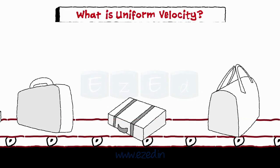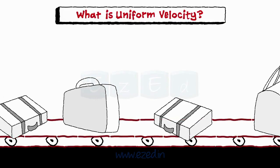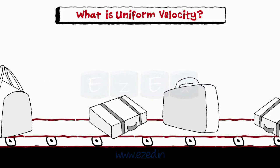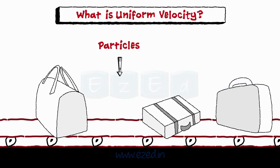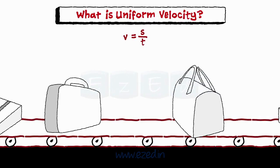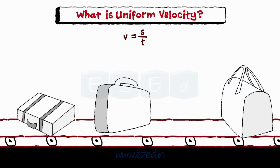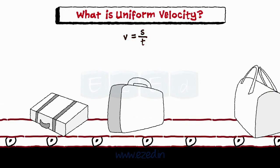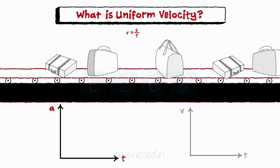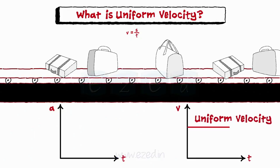What is uniform velocity? Bags moving on a conveyor belt move at a uniform rate — here, the bags are considered as particles. Therefore, if the particle moves with a constant velocity throughout the motion, then the particle is said to have uniform velocity motion. When the particle is performing uniform velocity motion, its acceleration is zero.